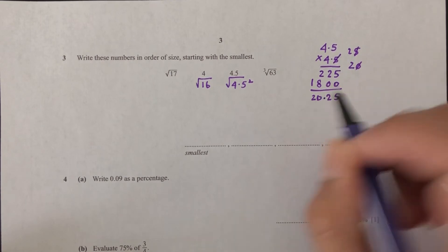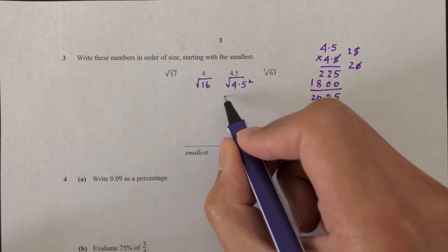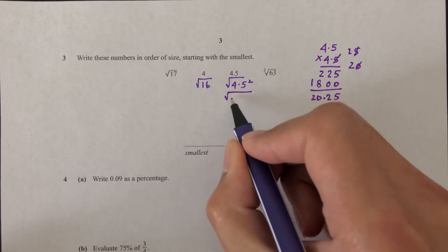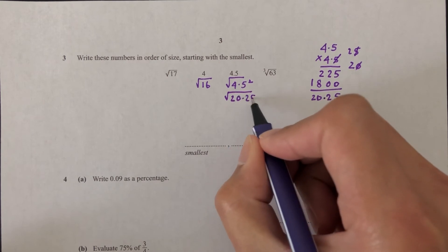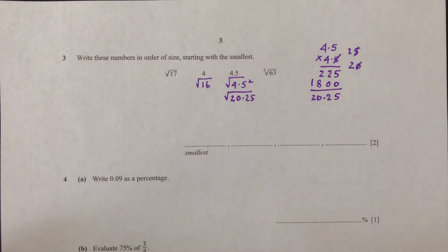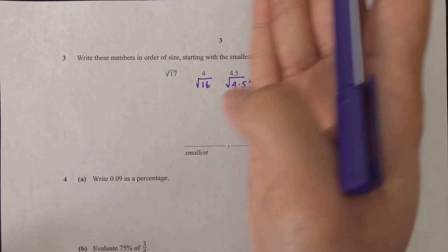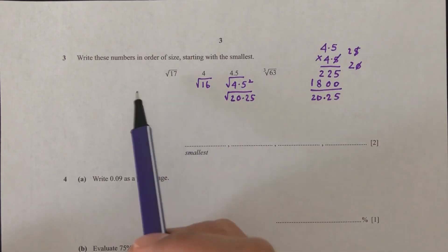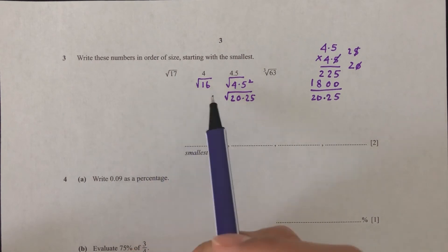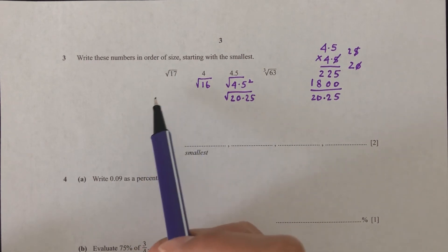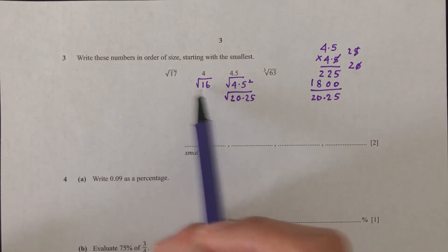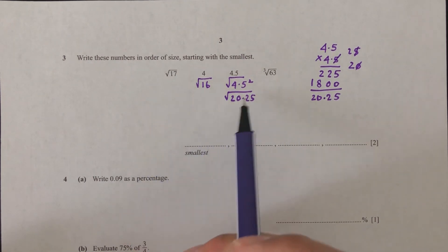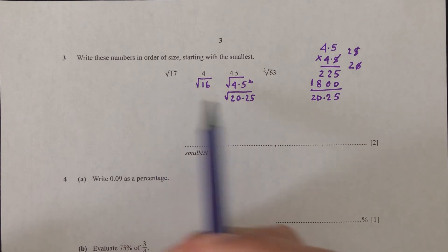So 4.5 is equal to square root of 20.25. Comparing square root of 16, square root of 17, and square root of 20.25, we can see that square root of 16 — which is 4 — is the smallest among these three numbers.